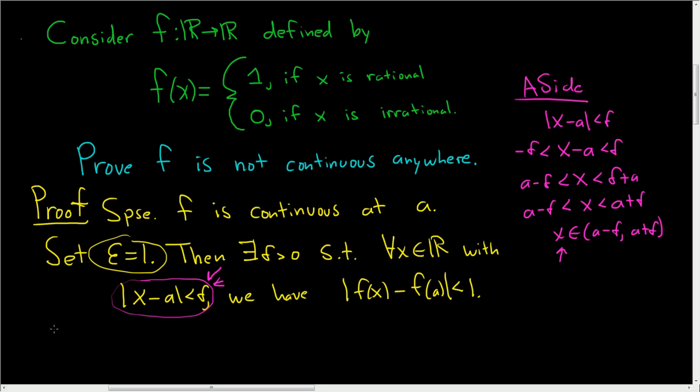Now we're going to take cases. If a is rational, let's do rational first. So if a is rational, then let's think about what that means for f(a). Well, if a is rational, then it looks like it's going to be equal to 1. So then f(a) is equal to 1.